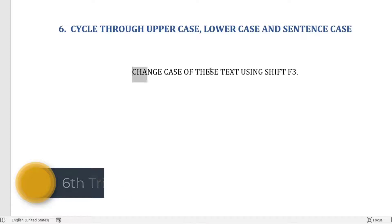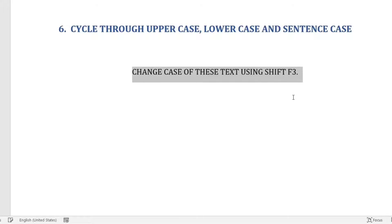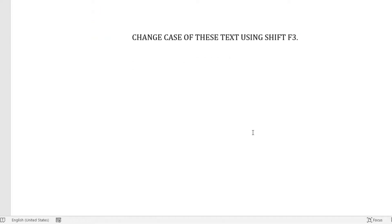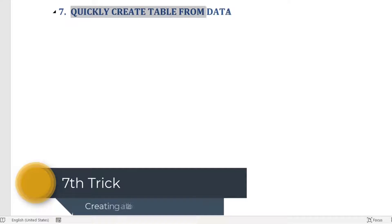The sixth tip: you can quickly cycle through uppercase, lowercase, and sentence case using Shift+F3. Just select the text whose case you want to change, then keep pressing Shift+F3 to cycle through lowercase, sentence case, and uppercase.